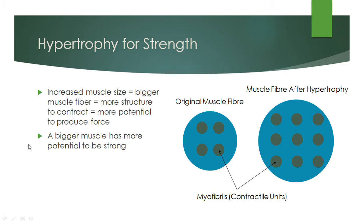What we can do is increase our muscle size — go through some hypertrophy. We basically have a bigger muscle fiber which has more contractile units in it, so there's more total structure that is able to contract and therefore we have more potential to produce force. A bigger muscle has more potential to be strong.